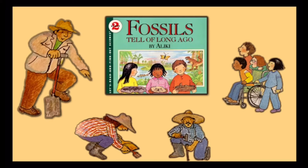Most animals and plants do not become fossils when they die. Some rot. Others dry up, crumble, and blow away. No trace of them is left. This could have happened to the big fish — we would have never known it had lived. Instead, the fish became a fossil. This is how it happened.